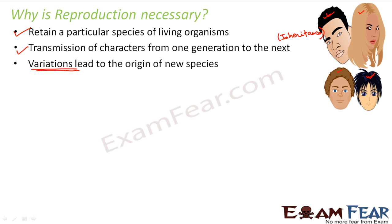In this example of the couple, the two children inherited some characters from the father and some from the mother. But there are some characters neither inherited from the father nor from the mother — a new character which the child has developed. For example, this child has very big eyes. His dad did not have big eyes, and the mom does not have big eyes either. So big eyes is something different from both parents — a new character that has come out of reproduction. These kinds of differences are known as variations.